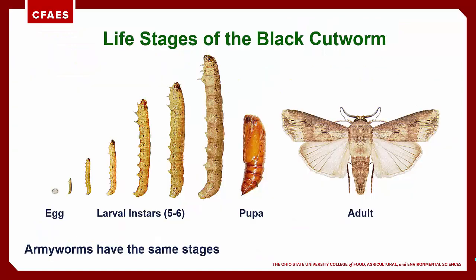The black cutworm and all the armyworms have a complete life cycle with egg, larval, pupal, and adult stages. Males usually undergo five larval instars while females undergo six — apparently the females undergo the sixth instar to be larger so they can produce more eggs. Our target is the larvae, and controlling smaller instar larvae will help prevent turf loss. In this illustration, you can clearly see the lighter wing tips of the adult moth and the diagnostic black dart mark on the wings.